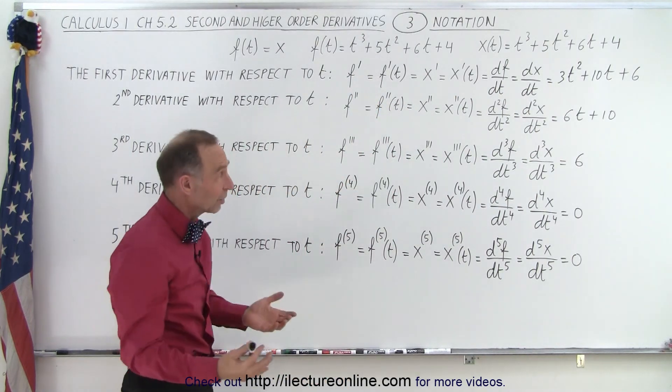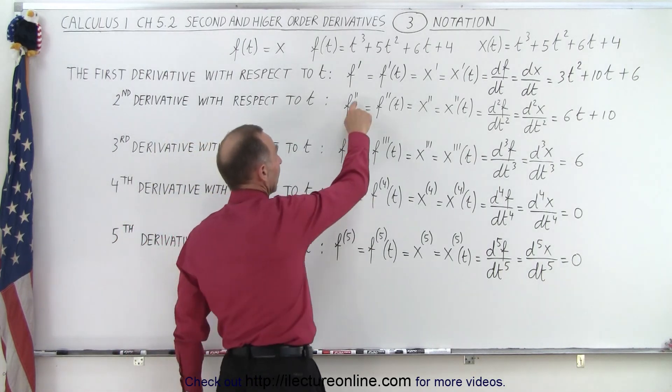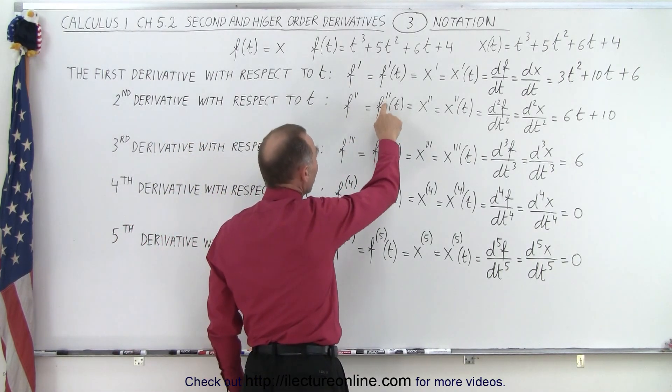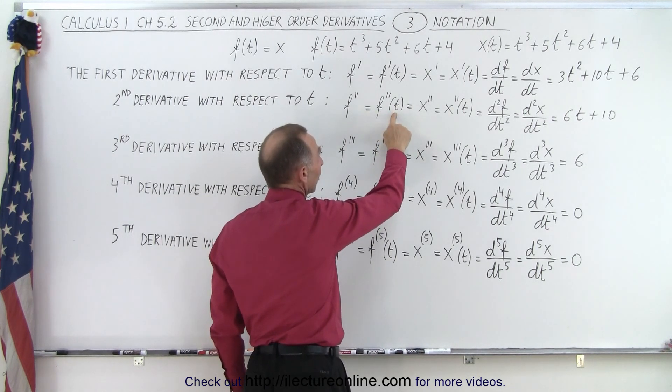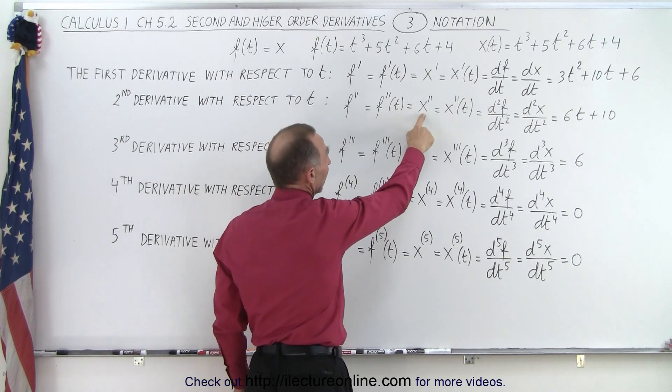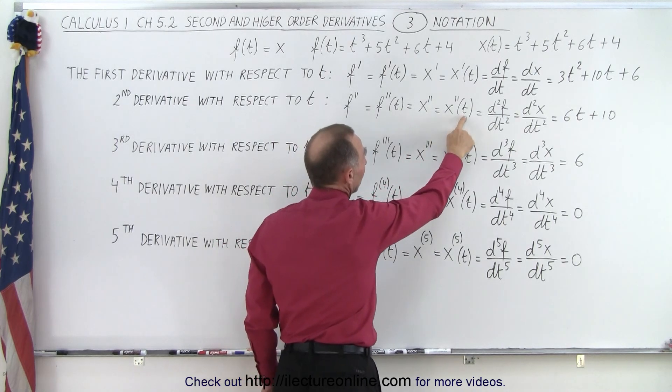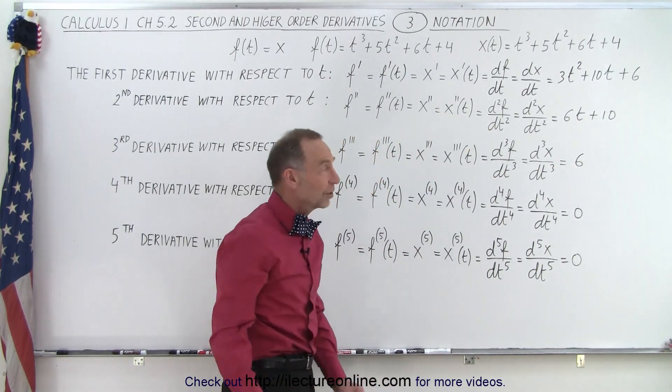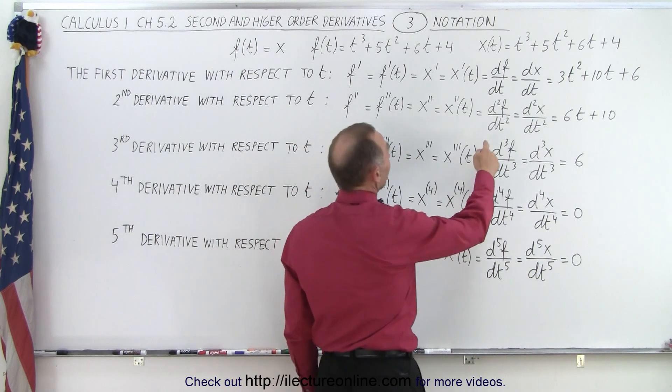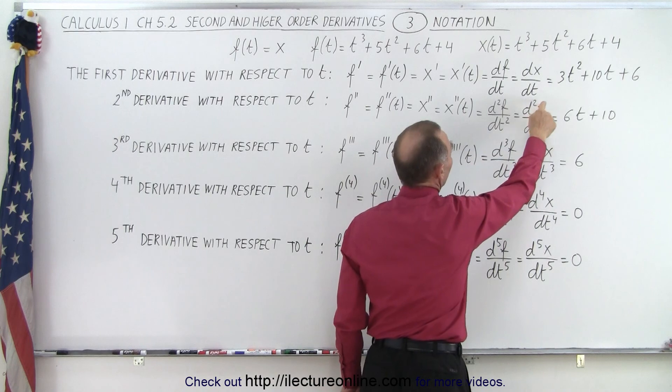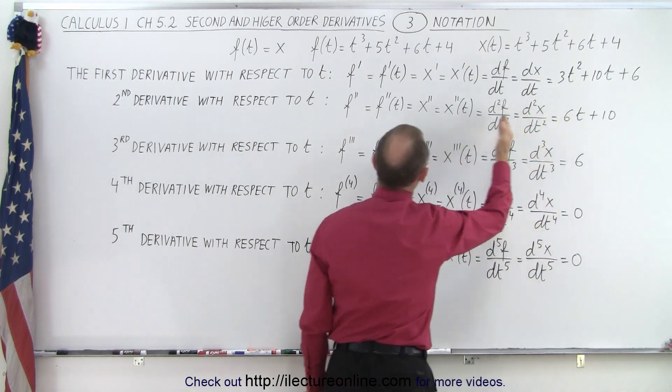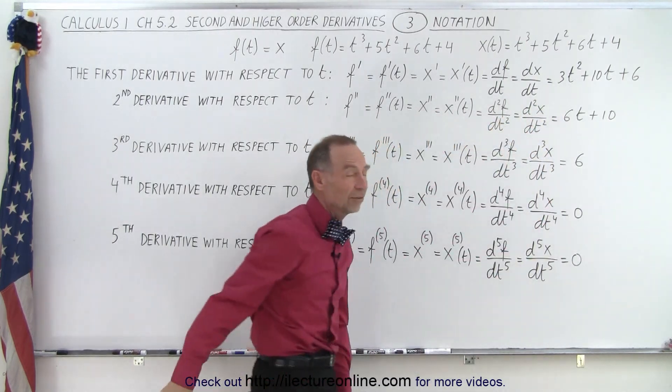If we then take the second derivative, again it applies the same way. f double prime, f double prime, but here we tell ourselves or tell the reader that this is a function of the variable t. We can write it as x double prime or x double prime, and we know that the function is of the variable t, and here we specifically indicate that it's a second derivative of the function with respect to time, or the second derivative of x with respect to time again. And all these different notations mean exactly the same thing.